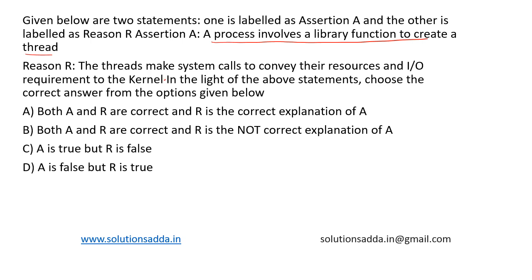In the light of the above statements, we have to choose the correct answer. Option one: both A and R are correct and R is the correct explanation of A. Option two: both A and R are correct but R is not the correct explanation of A. Option three: A is true, R is false. Option four: A is false, R is true. So let's analyze each of the statements.